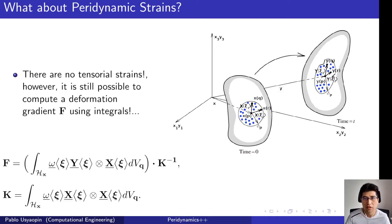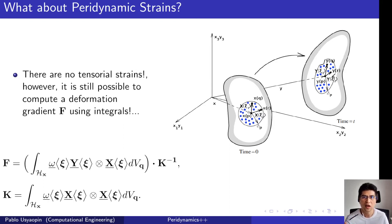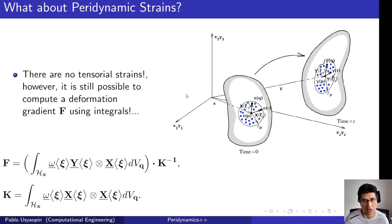But what about peridynamics? How do we compute this deformation gradient, and more importantly, do we actually need it? Well, the truth is that there are actually no computed strains in peridynamics. You don't actually need to compute strains because the peridynamics formulation tries to avoid the assumption of continuity in the displacement field, as required by classical mechanics. So you don't really need to compute a deformation gradient F because you are working with the true displacements.